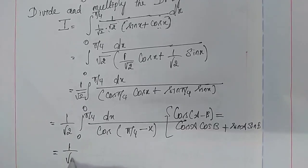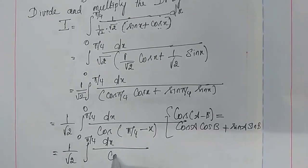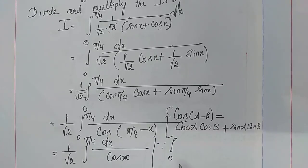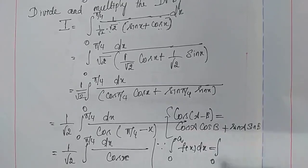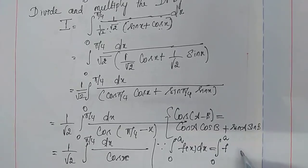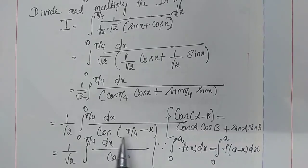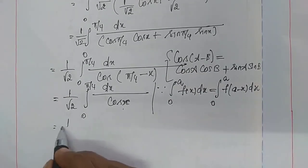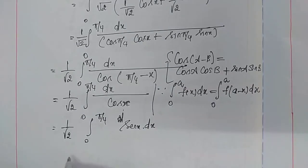This equals (1/√2) times integral from 0 to π/4 of dx/cos(π/4 − x). Using the property ∫₀^a f(x)dx = ∫₀^a f(a − x)dx, we can write cos(π/4 − x) as cos x. So the integral becomes (1/√2) ∫₀^(π/4) sec x dx.